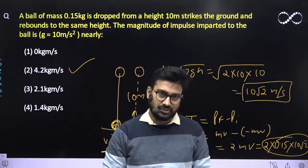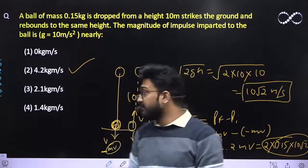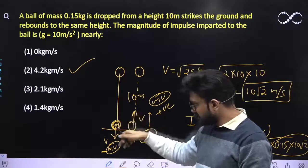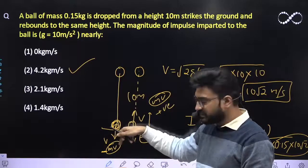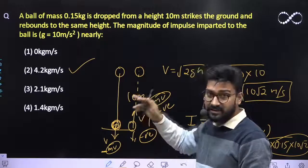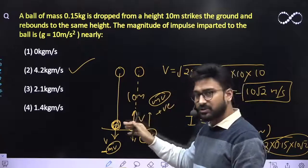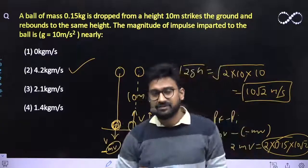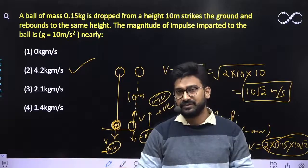So this is the final answer that you should get. You need to remember one thing: since the speed with which it will hit the ground as well as the speed with which it will rebound is the same, that means it is an elastic collision. So that means there is no loss of energy, so that's why it is going to its same height. Rest everything is clear. I hope this question is clear to everyone. Thank you.